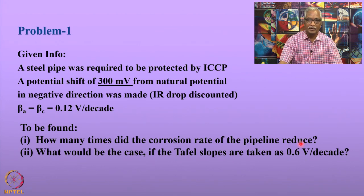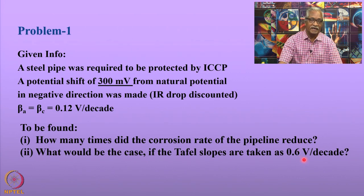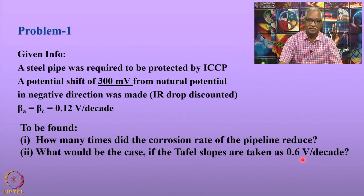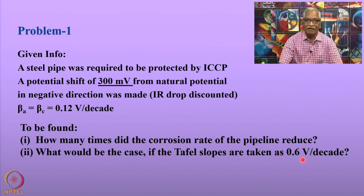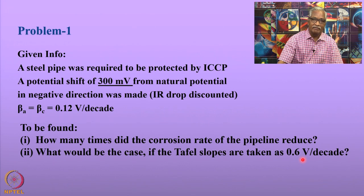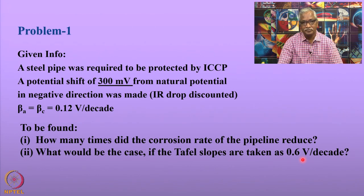If the Tafel slope is 0.6 volt per decade, then what will be the corresponding decrease in corrosion rate? This problem gives us an understanding of how the Tafel slopes affect the intended corrosion rates for a given polarized potential.